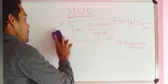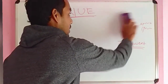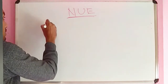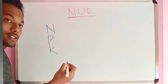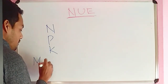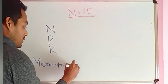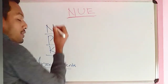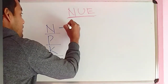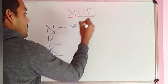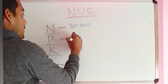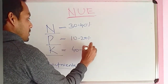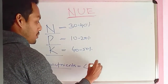First of all, why should we worry about nutrient use efficiency? The major nutrients we apply in the field are NPK, and there are also very important micronutrients. Do you know what is their efficiency? The efficiency of nitrogen in field condition is 30 to 40 percent. The efficiency of phosphorus is even lower. The efficiency of potassium is around 40 to 50 percent, and for micronutrients it is less than 2 percent.